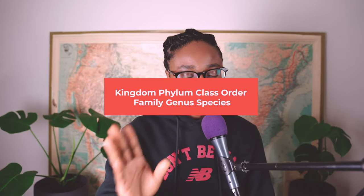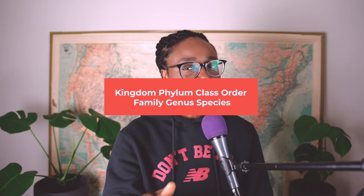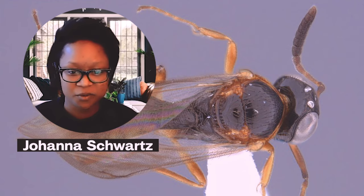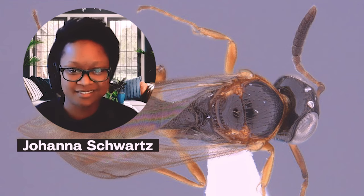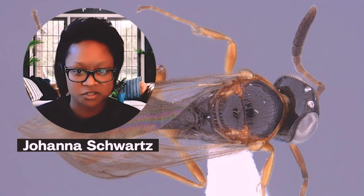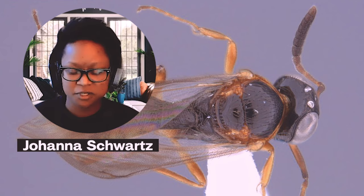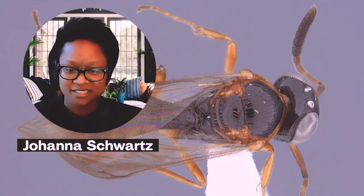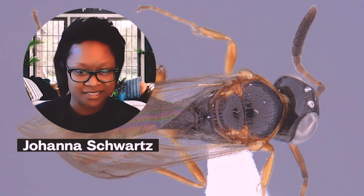Johanna specifically looks at the superfamily Platygastroidea—a pretty large superfamily of about 6,000 currently described species, all very tiny parasitoid wasps. But wait—kingdom, phylum, class, order, family, genus, species doesn't include superfamily. When you have so many families, especially in insects, we like to group them together. All the groups within a superfamily are closer to each other than to another superfamily—like grouping cousins on your mom's side versus your dad's side.